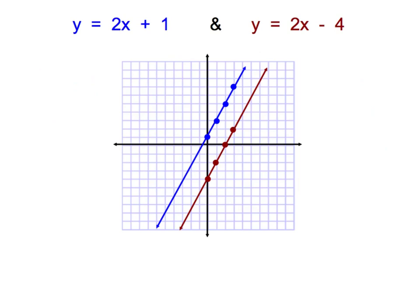Remember that our third step is to write our solution. In our other assignments we found where the two lines intersect, but these lines are parallel — they have the exact same slope. We can continue these points on and on; they're never going to intersect, so we say that this system has no solution.